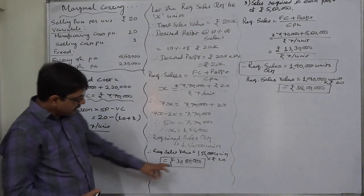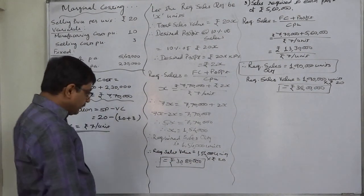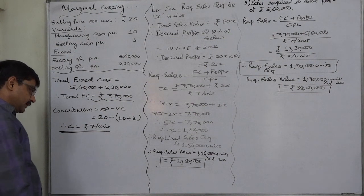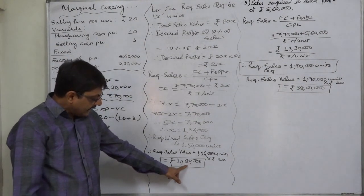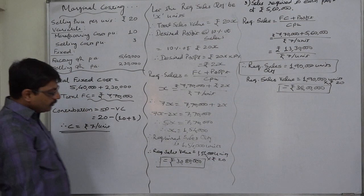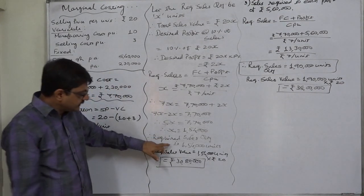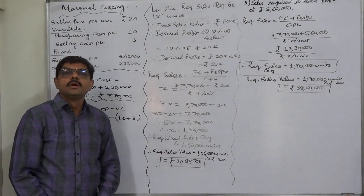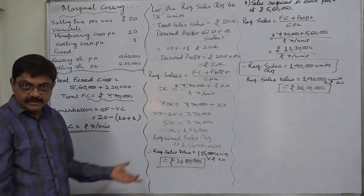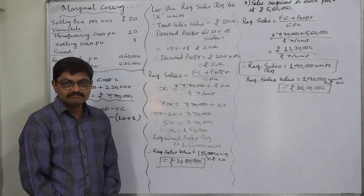Verification: 10% of ₹30,80,000 is ₹3,08,000 — that is the profit. BEP is 1,10,000 units, so margin of safety is 1,54,000 minus 1,10,000 equals 44,000 units. 44,000 into ₹7 contribution equals ₹3,08,000 profit. This confirms the calculation is correct. Thank you very much.